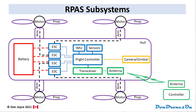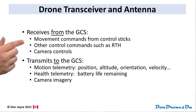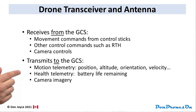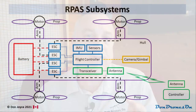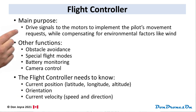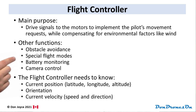On the drone itself, there is a corresponding transceiver and antenna subsystem, which receives the commands from the GCS and transmits back position, camera feed, and telemetry information like battery life remaining. The transceiver is tied directly to the flight controller — the brain of the drone. The main purpose of the flight controller is to drive signals to the motors to implement the pilot's movement requests, all the while compensating for whatever environmental craziness is going on, such as the wind. The flight controller also performs obstacle avoidance, monitors battery conditions, and manages camera and gimbal positioning along with the image feed to the pilot.